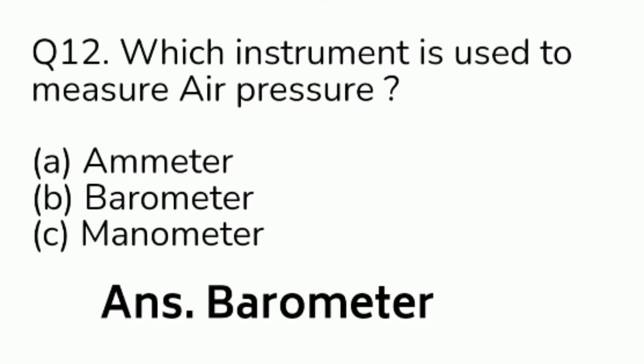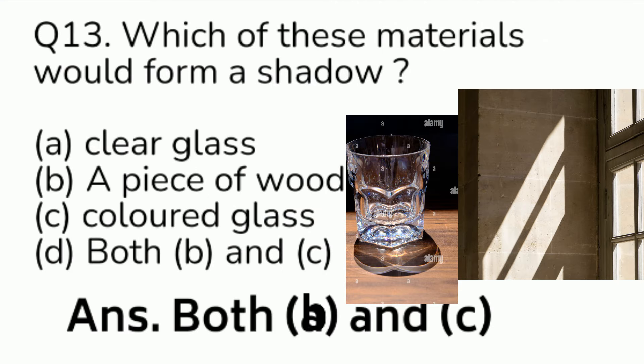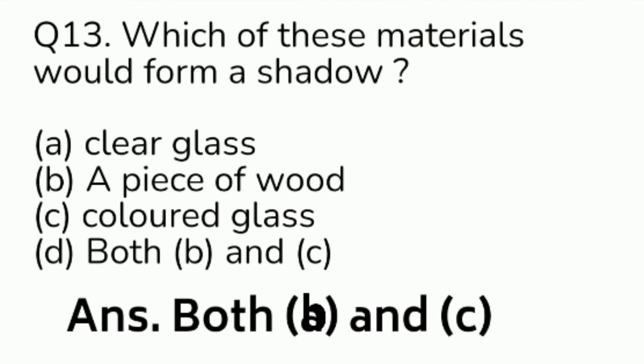Question number 13. Which of these materials would form a shadow? Option A: clear glass. Option B: a piece of wood. Option C: coloured glass. Option D: both B and C. Answer is Option D, both B and C.